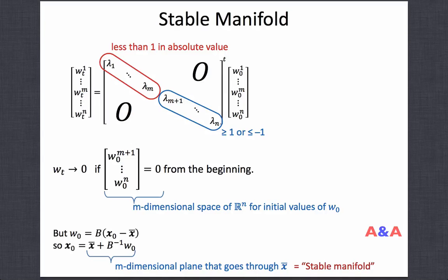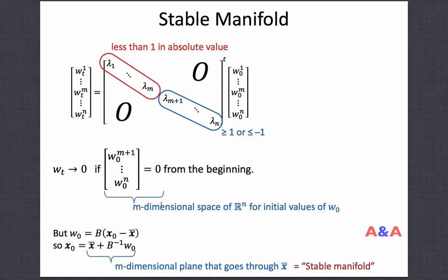These latter lambdas are larger than 1 in absolute value — noting they can sometimes be complex. In summary, the vector W converges to 0 if and only if W_{m+1} through W_n are originally 0. If they are 0 from the beginning, the whole W converges because W_1 through W_m converge anyway, since those corresponding lambdas are smaller than 1.